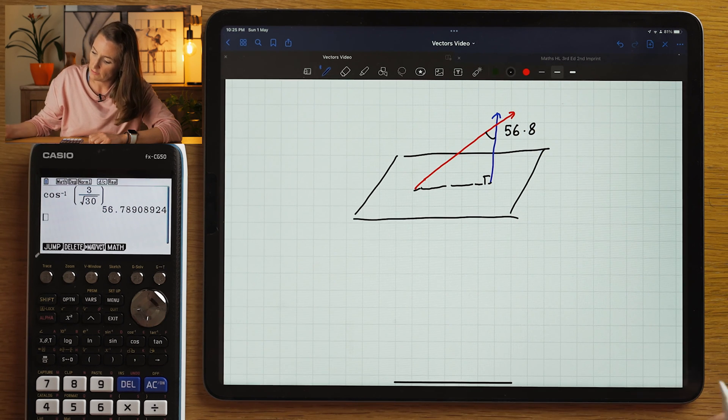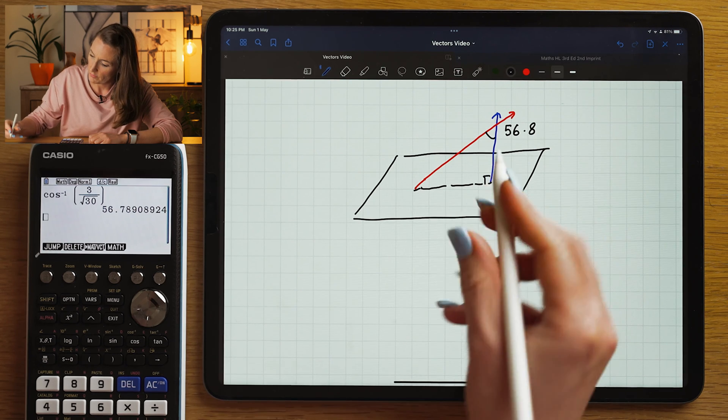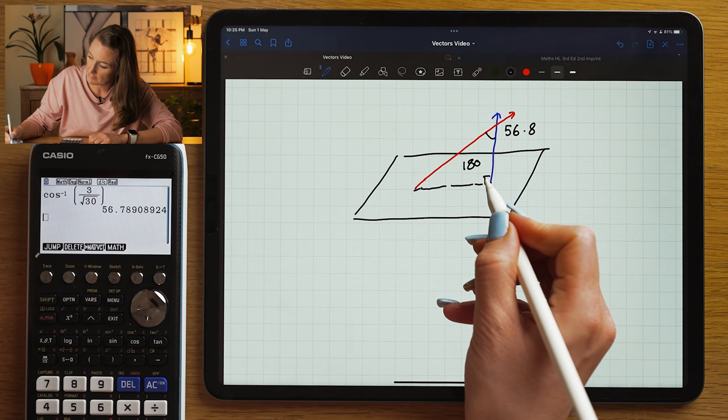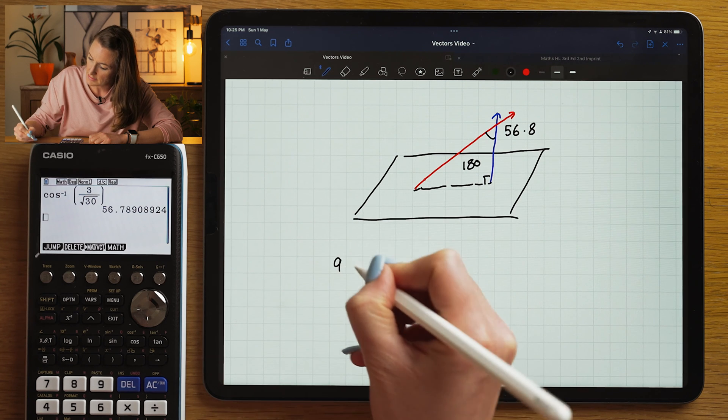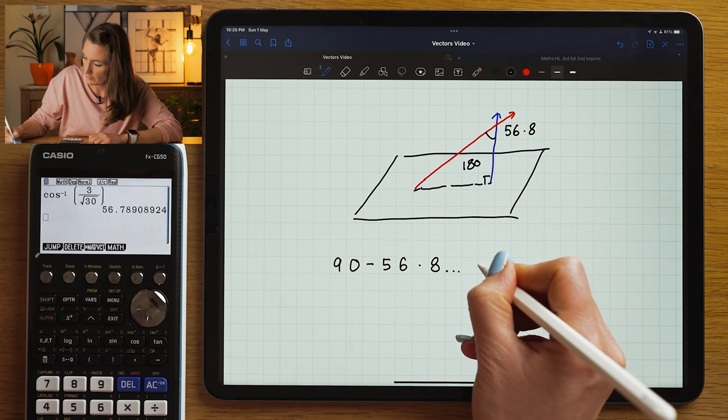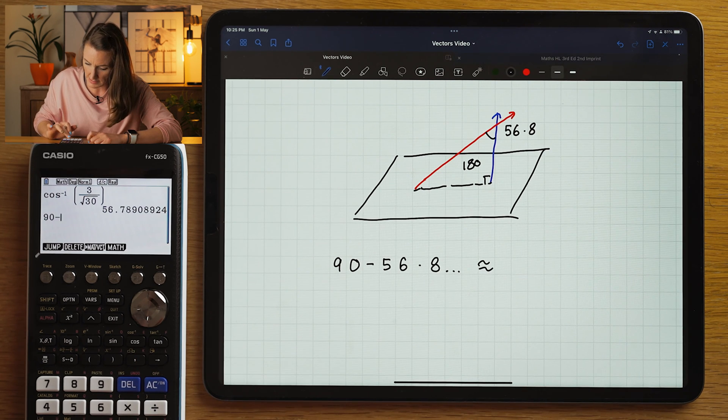So to find the angle that we need to do, you can just do the triangle will add up to 180 degrees. That's 90 already. 180 take away 90 is 90. 90 minus my answer is approximately equal to 90 minus the answer.